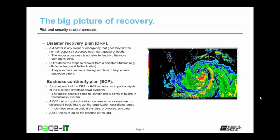The DRP also has sections dealing with employee safety. A sub-element of the DRP is the business continuity plan, or BCP. A BCP includes an impact analysis of the business effects of downed systems, which helps to identify single points of failure. A BCP helps to prioritize what systems or processes need to be brought back first to get an organization operational again. It identifies mission-critical systems, processes, and data. The business continuity plan helps to guide the creation of the disaster recovery plan.